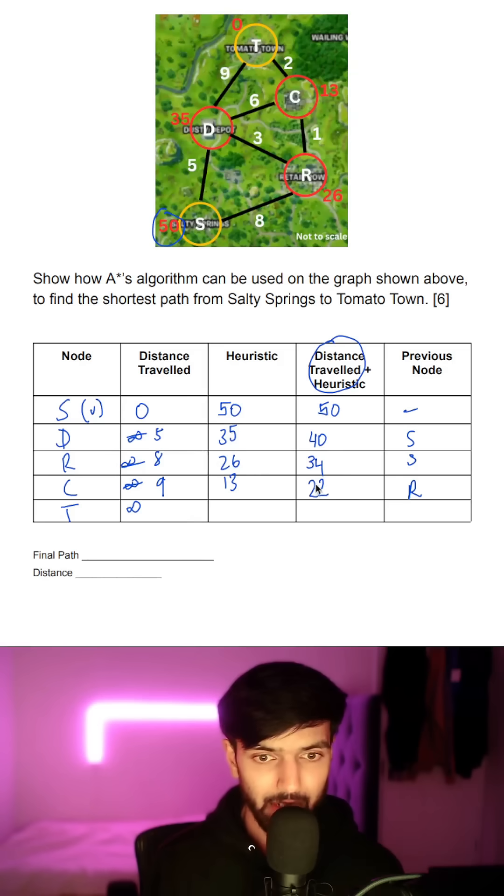We look at the smallest value which is 22. And C's children which is T which has a distance of 11. And the heuristic value of 0 because that's the last node. That's 11. And we came from C.